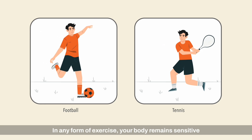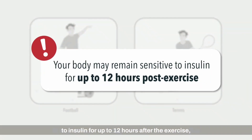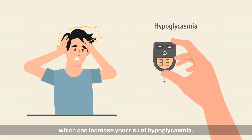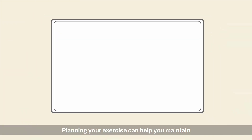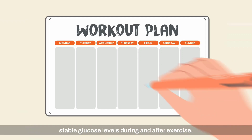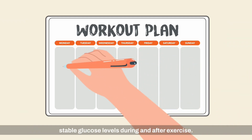In any form of exercise, your body remains sensitive to insulin for up to 12 hours after the exercise, which can increase your risk of hypoglycemia. Planning your exercise can help you maintain stable glucose levels during and after exercise.